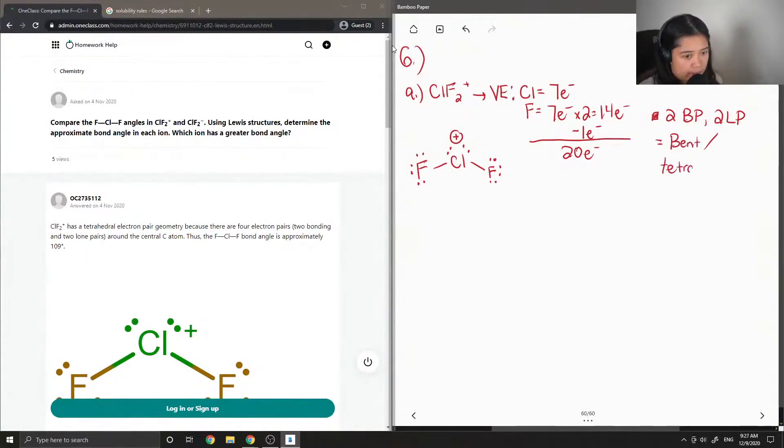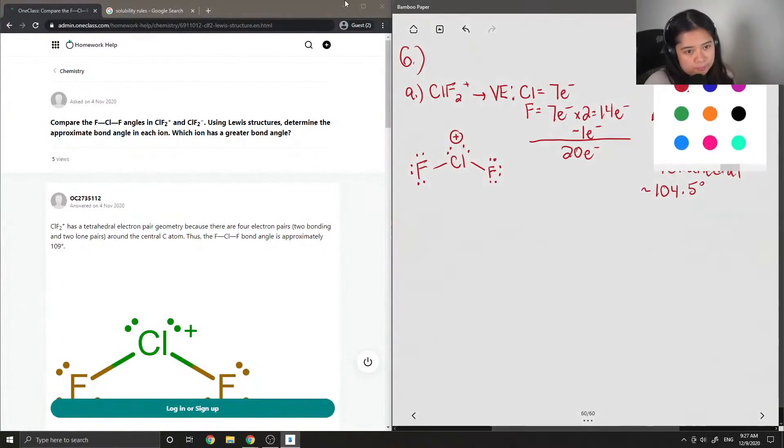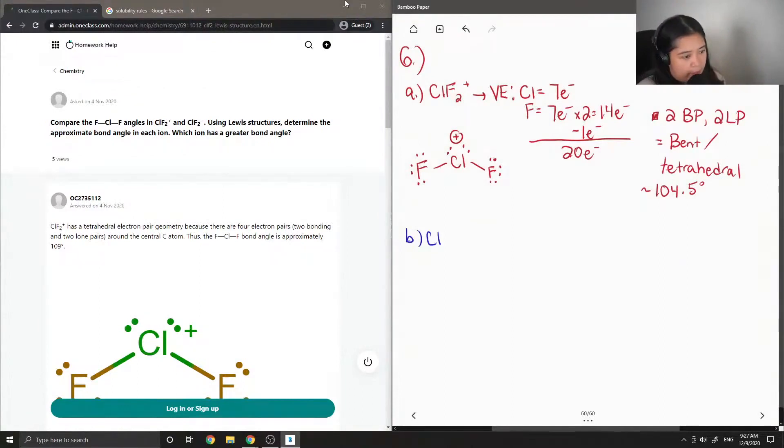And the bond angle for these types of shapes is around 104.5 degrees. Now let's do the same thing for the negatively charged compound.